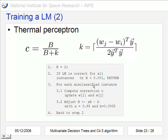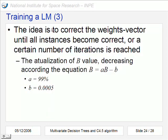But for all wrong classifications we compute the correction c here, update this weights vector and adjust this value of b. The idea, as I already said, is to correct the weights vector until all instances become correct or a certain number of iterations is reached. And this number will be controlled by this equation that always decreases the value of b.